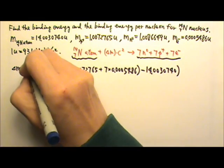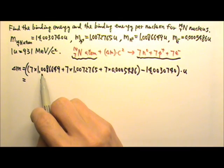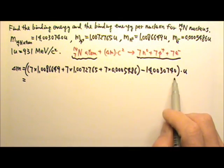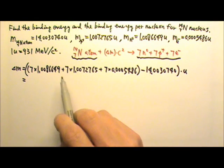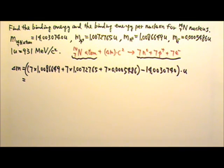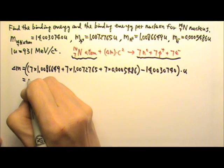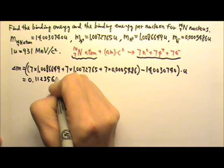And this is in unit U. So let's do the calculation. It is very important that at this step we do not round any of the numbers, because the numbers are really close. If we round the numbers, we may end up having 0 for the mass defect. So I get 0.112356U.